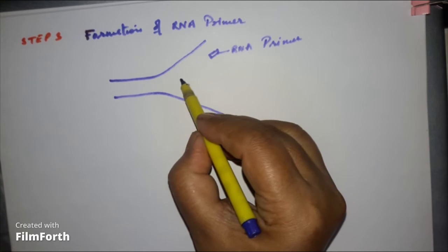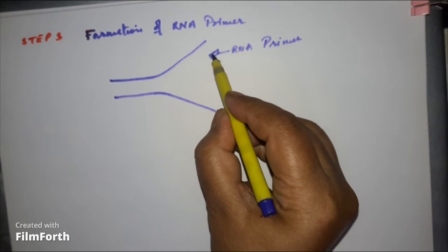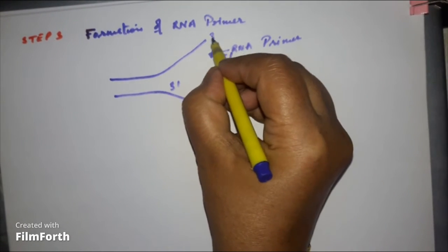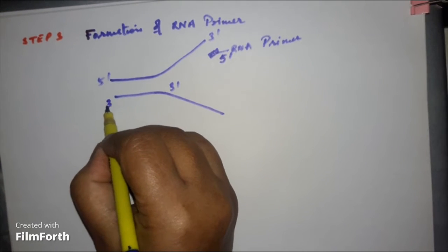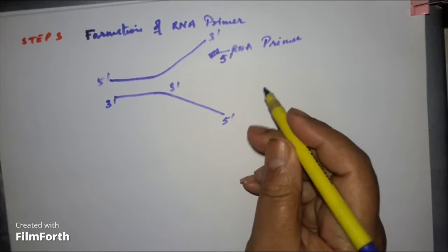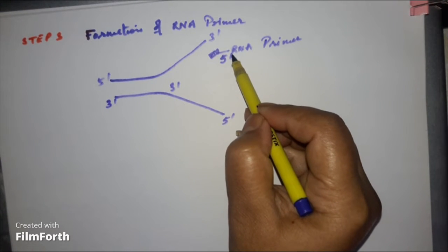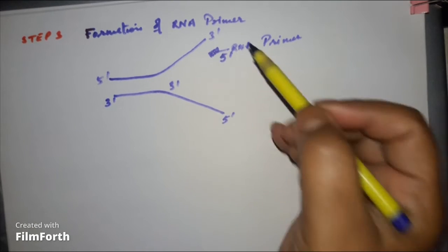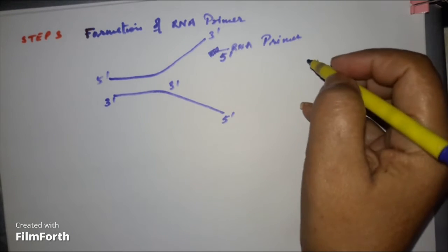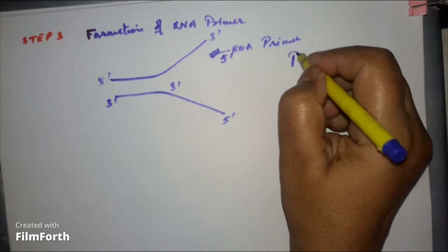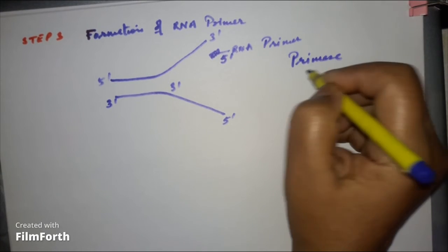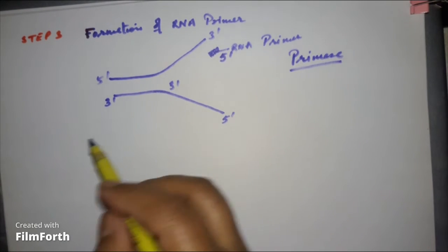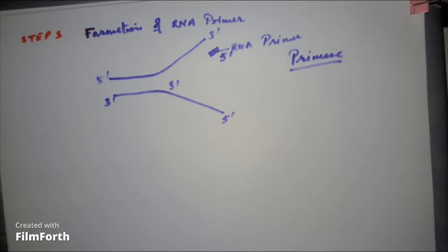This RNA primer is the stepping stone on which the DNA will be synthesized. And always it takes place in 5 prime to 3 prime direction. This is 3 prime and this is 5 prime. It will always start from 5 prime. So this chain is going to start from here. RNA primer is produced. There is an enzyme which is called primase enzyme. So primase enzyme helps in starting this chain.